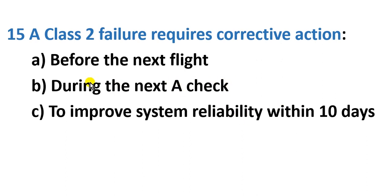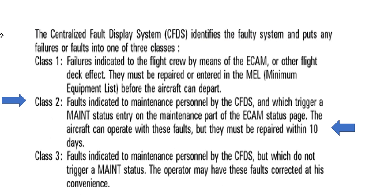I want to show you the difference between class failure, level failure, category, and the minimum equipment list. Here are the classes: Class 1, Class 2, Class 3. Class 1 failure indicates to the flight crew by means of the ECAM or the flight display — the effect must be repaired and entered in the log before the aircraft can depart.